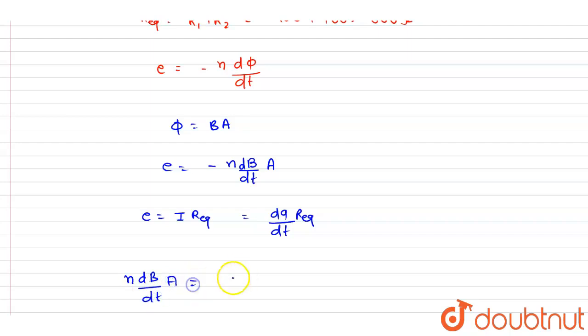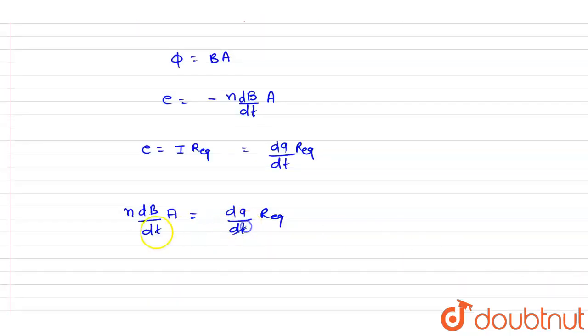Current is dq by dt, and R equivalent is the resistance of the circuit. We want this dq, the charge flown. So I will write down dq, the charge flown through the circuit, equals the number of turns times area times change in magnetic field divided by the R equivalent.